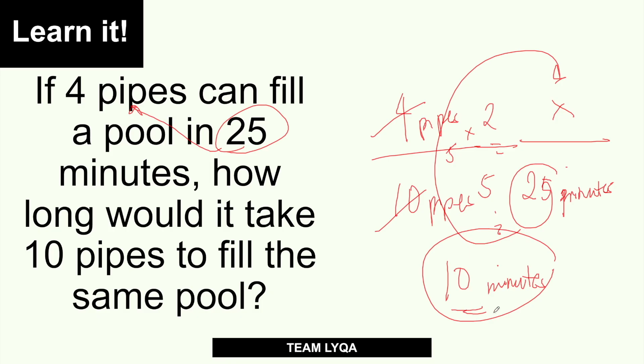So what I want you to understand here is: first, think about whether the question is inverse or direct proportion. Then, switch the position of the known value if it's inverse. And then solve using ratio rotation to get the correct answer.